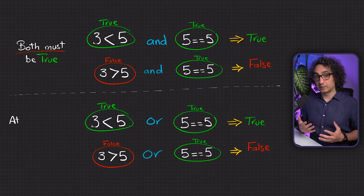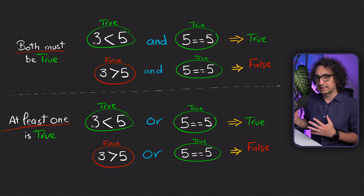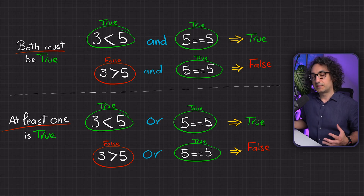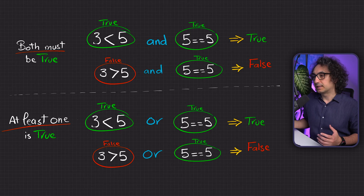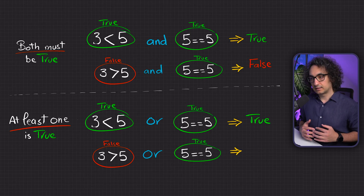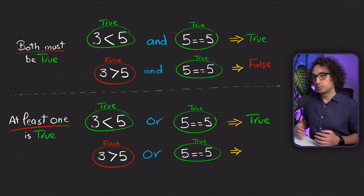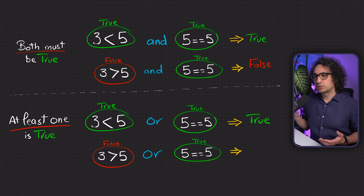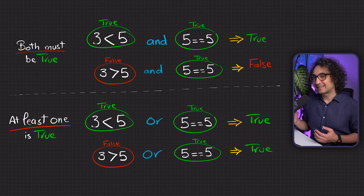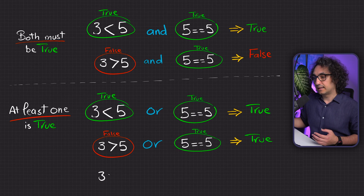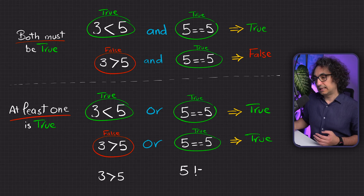Now let's try the 'or' operator. If you use 'or', you are telling Python that at least one condition must be true. For the first example where both are true, we get true — more than enough. For the second example with one false and one true, since we're using 'or', one true is enough, so the output is still true. The 'and' is more restrictive.